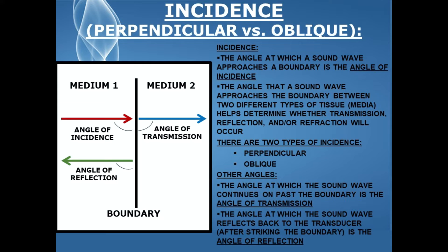You can see this in the diagram. The red arrow shows the sound wave approaching a boundary, and the angle created between the sound wave and the boundary is known as the angle of incidence. The blue arrow delineates a sound wave continuing past the boundary — that angle is the angle of transmission. The green arrow depicts the angle of reflection, which is the angle created between the sound wave reflecting back to the transducer after it strikes the boundary, and the boundary itself.